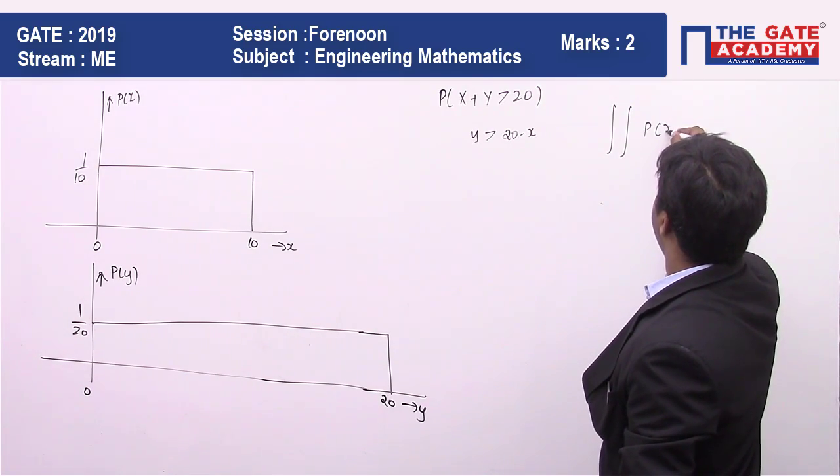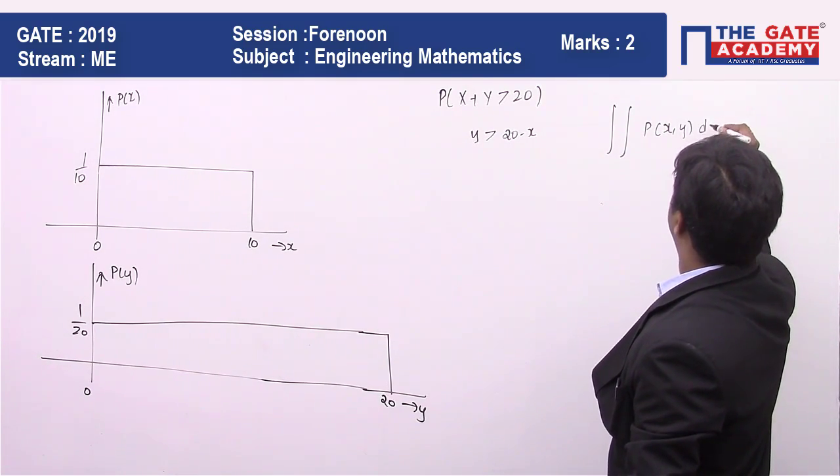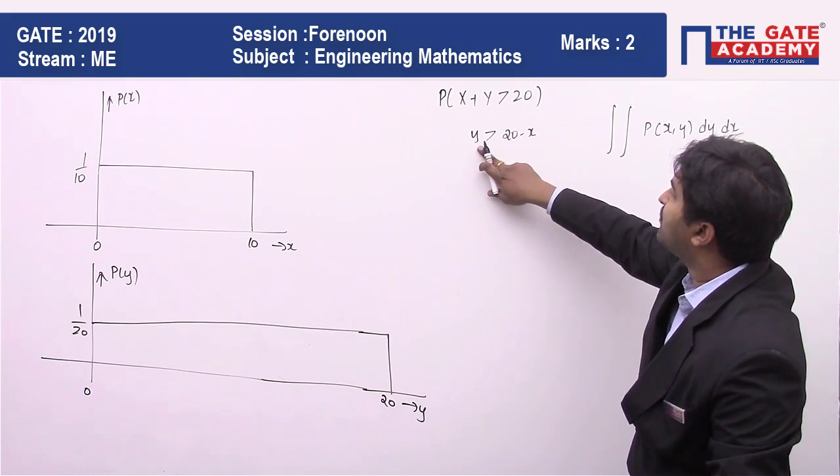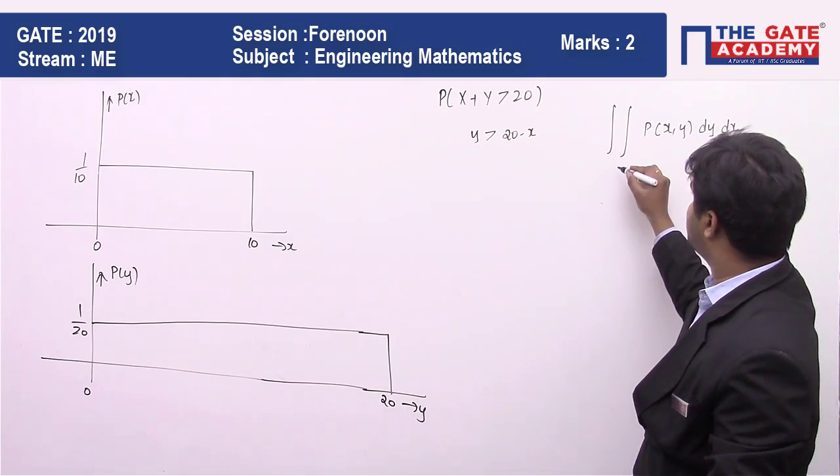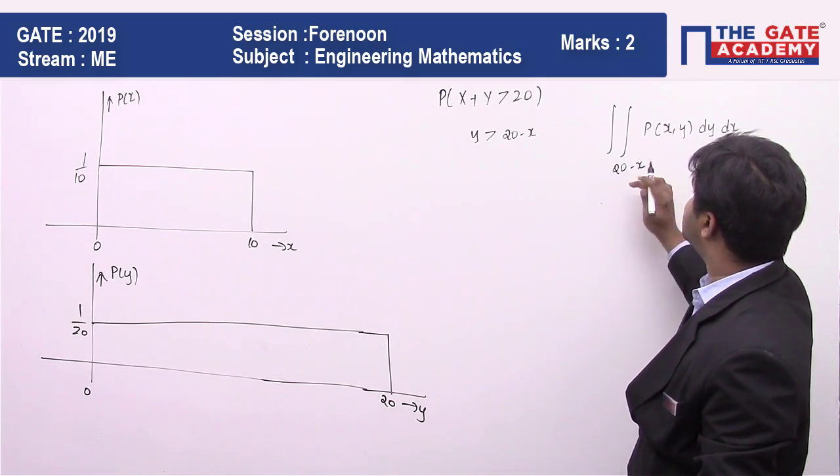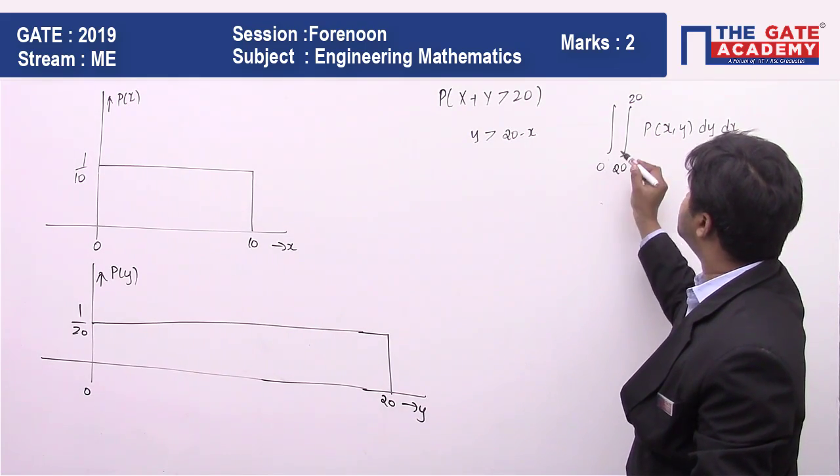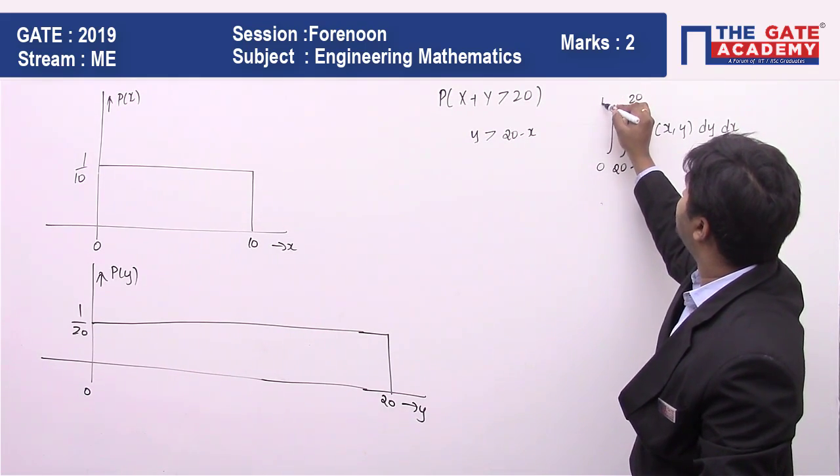Probability of x comma y dy dx, where y is going to range from y is greater than 20 minus x, and it can take the maximum value of 20, where x is going to range between 0 to the value of 10.